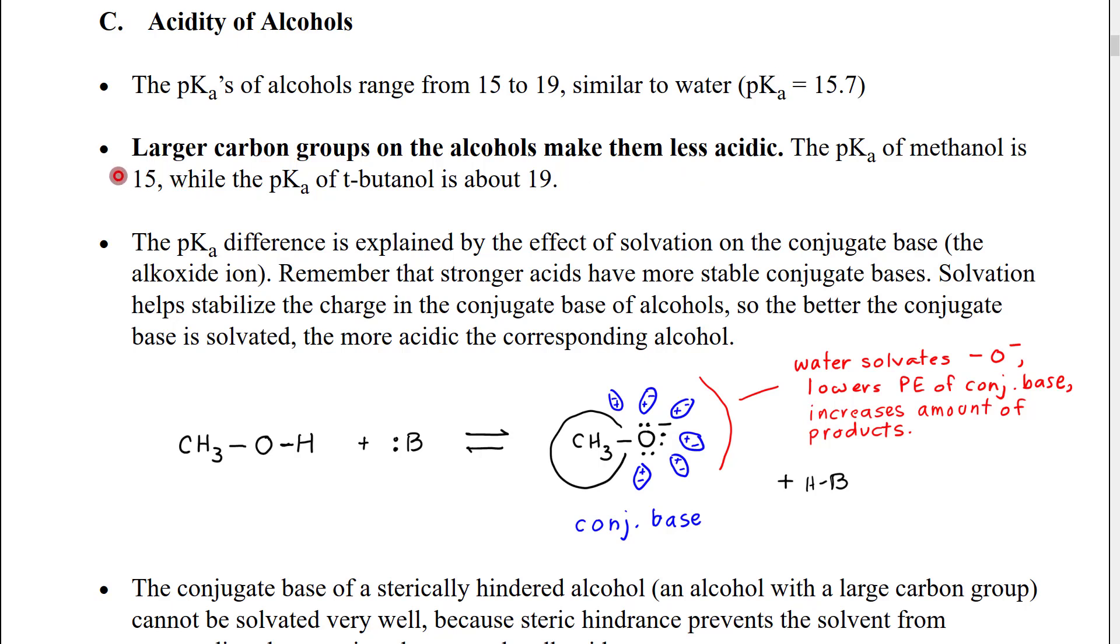What we see for this pKa range is that larger carbon groups on the alcohol make them less acidic. So we see that the pKa of methanol, which has a very small, not sterically hindered carbon group, is about 15, whereas the pKa of tert-butyl alcohol, again using kind of the incorrect tert-butanol, is about 19.